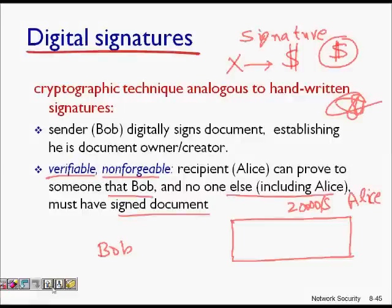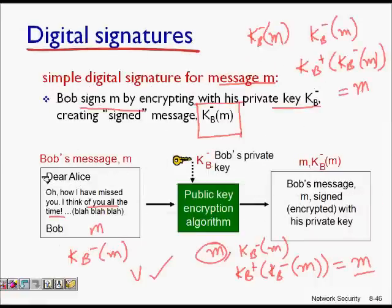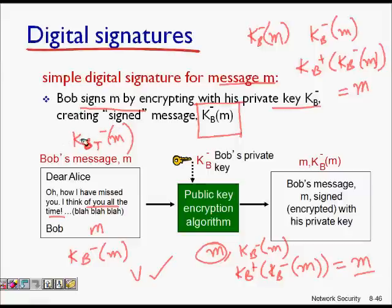Next, how is it non-forgeable? It is very difficult for another person, say Trudy, to find some message to sign such that when Alice applies Bob's public key she gets message m back. The inverse process is extremely difficult — almost impossible — so the signature is non-forgeable.